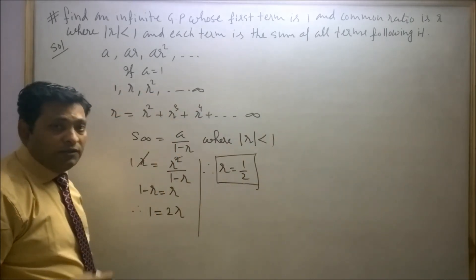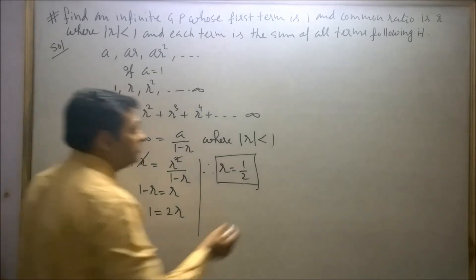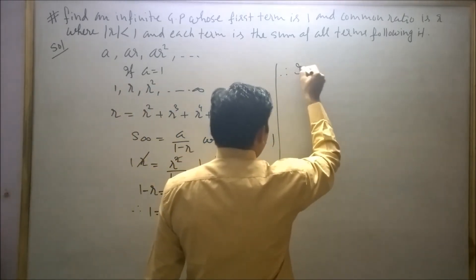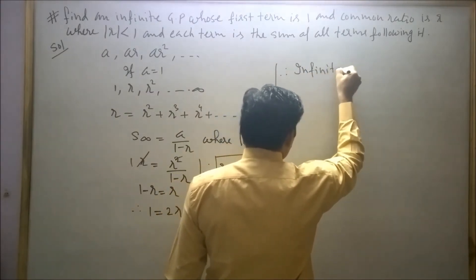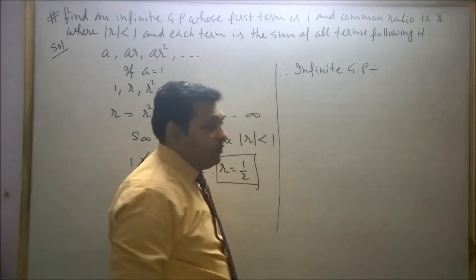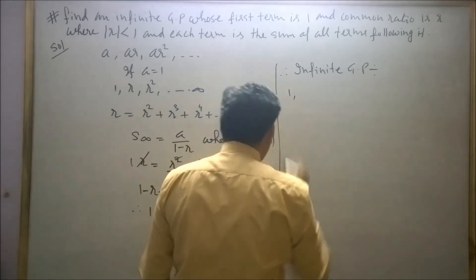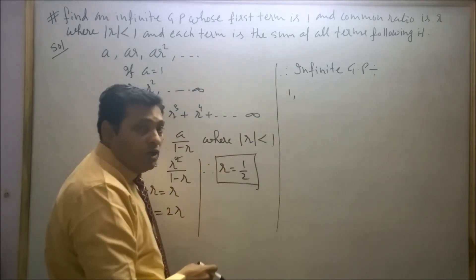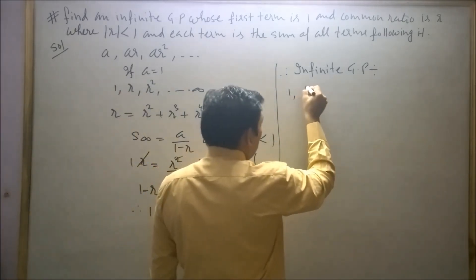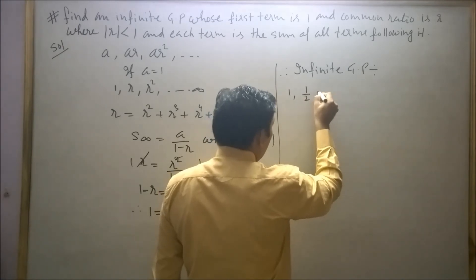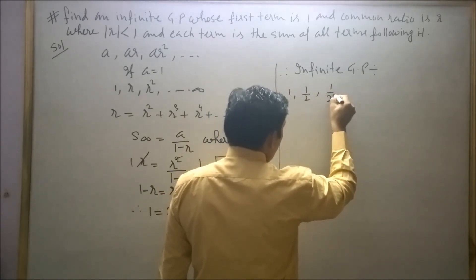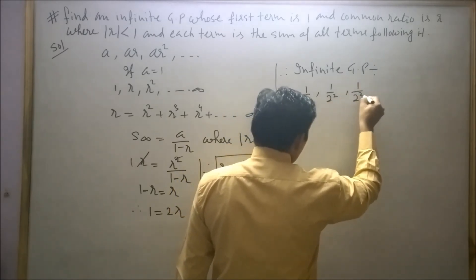Therefore infinite GP will be: as first term is one, we have found out R is equal to half, so next term will be one by two, and the third term will be one upon two square, one upon two cube.